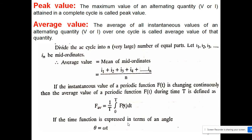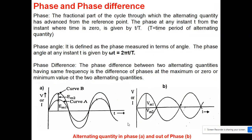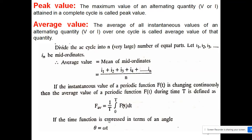The peak value is the maximum value of an alternating quantity, whether voltage or current, attained in a complete cycle. The average value is the average of all instantaneous values of an alternating quantity over one cycle, and is called the average value of that quantity.